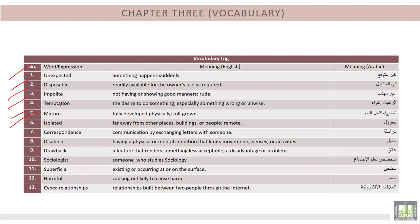6. Isolated. 7. Correspondence. 8. Disabled. 9. Drawback. 10. Sociologist. 11. Superficial. 12. Harmful. 13. Cyber Relationships. Now you are required to listen to the conversation and then answer the questions that follow.